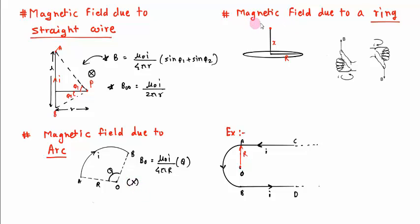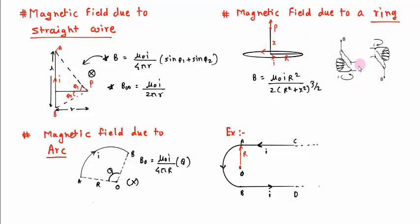Now we'll calculate the magnetic field due to a circular current-carrying loop. With current I flowing in the anticlockwise direction, the magnetic field at point P on the axis at distance x is B = μ₀Ir² / [2(r² + x²)^(3/2)]. We curl our fingers in the direction of current and the thumb gives the direction of the magnetic field, which is upward along the axis. This is the magnetic field due to a circular loop or current-carrying ring.